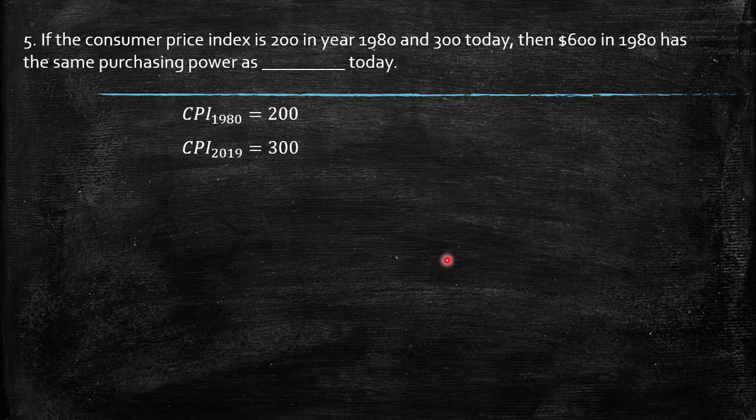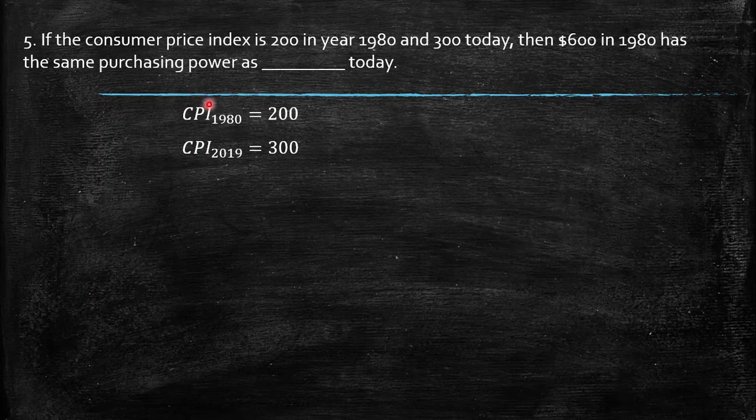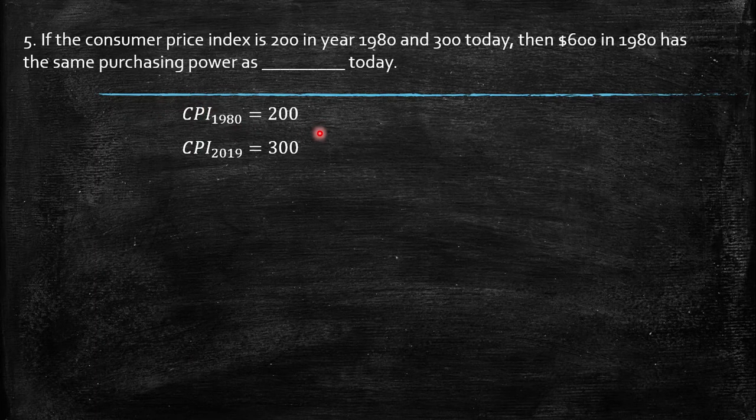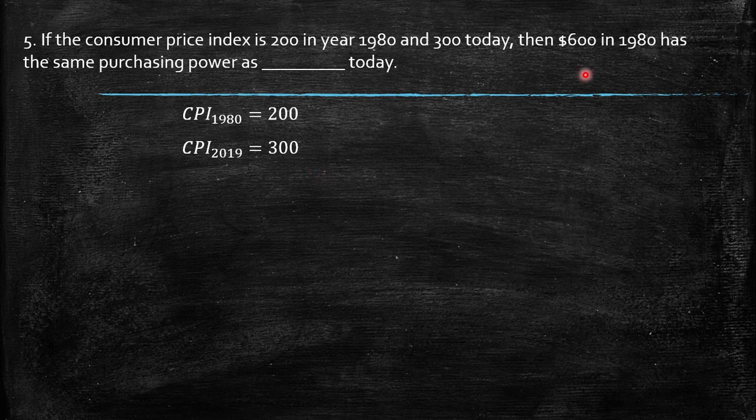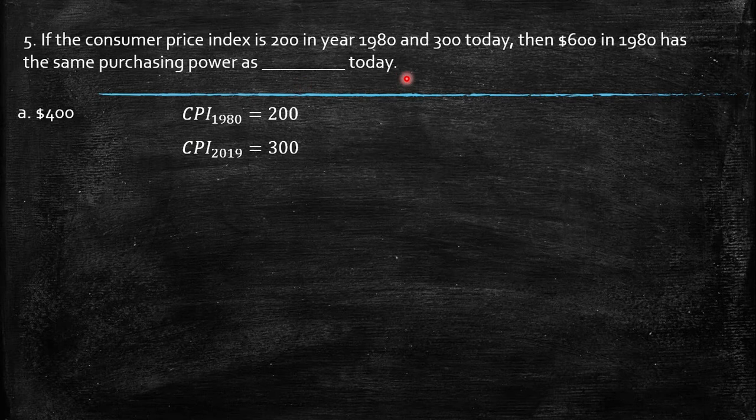Number five. If the consumer price index is 200 in 1980, so here we have CPI 1980 equals 200, and 300 for today 2019, then $600 in 1980 has the same purchasing power as today.